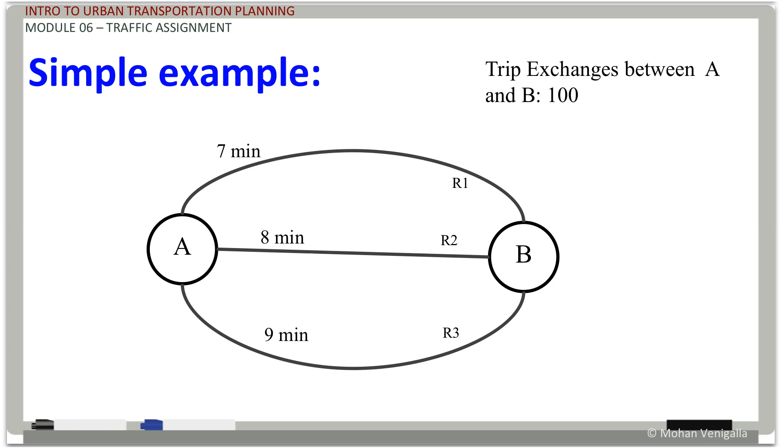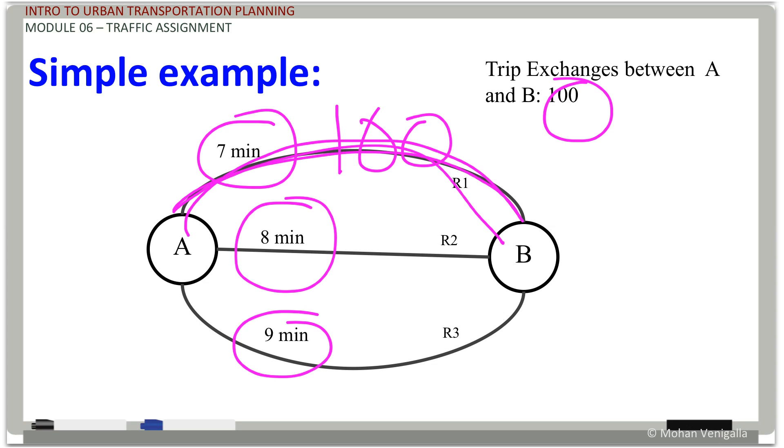So here's a simple example. From A to B, seven minutes by route one, eight minutes by route two and nine minutes by route three. And you have hundred trips. Bingo. Put them all here, which is the shortest path. All or nothing. You put all of them there. That's it.